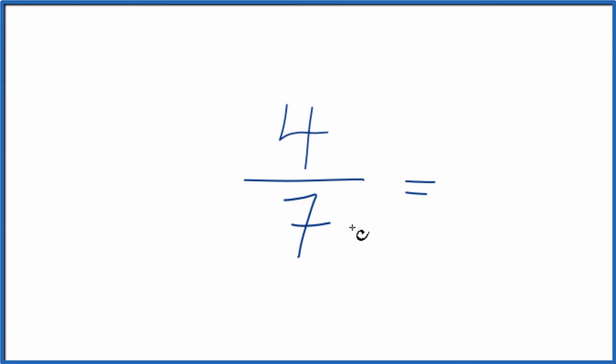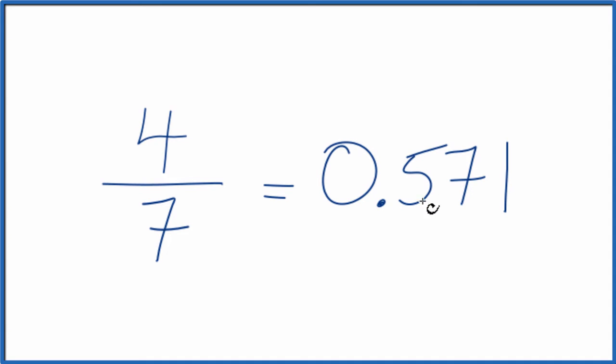We could just put 4 divided by 7 in our calculator, and we'd end up with 0.571, and this number keeps going. So I've just rounded this to 3 decimal places here. So that's if we use our calculator.